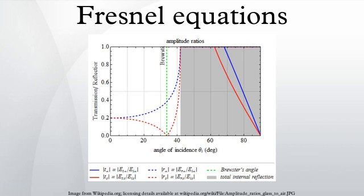Special angles: At one particular angle for a given n1 and n2, the value of Rp goes to zero and a p-polarized incident ray is purely refracted. This angle is known as Brewster's angle, and is around 56 degrees for a glass medium in air or vacuum. Note that this is only true when the refractive indices of both materials are real numbers, as is the case for materials like air and glass. For materials that absorb light, like metals and semiconductors, n is complex and Rp does not generally go to zero.